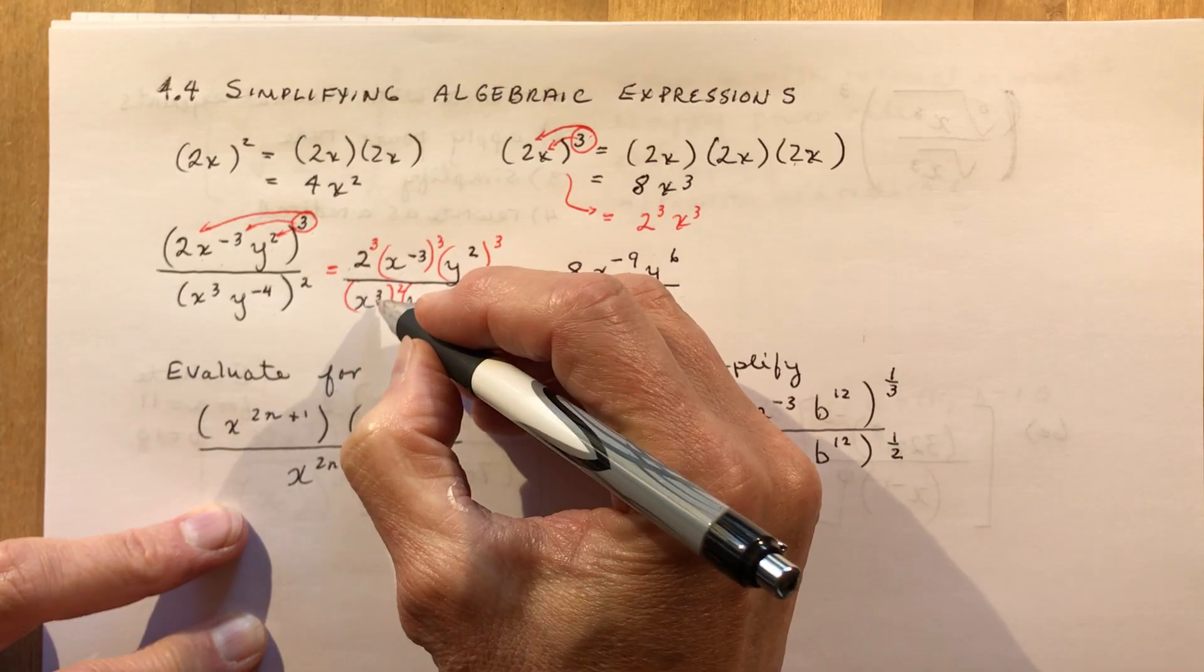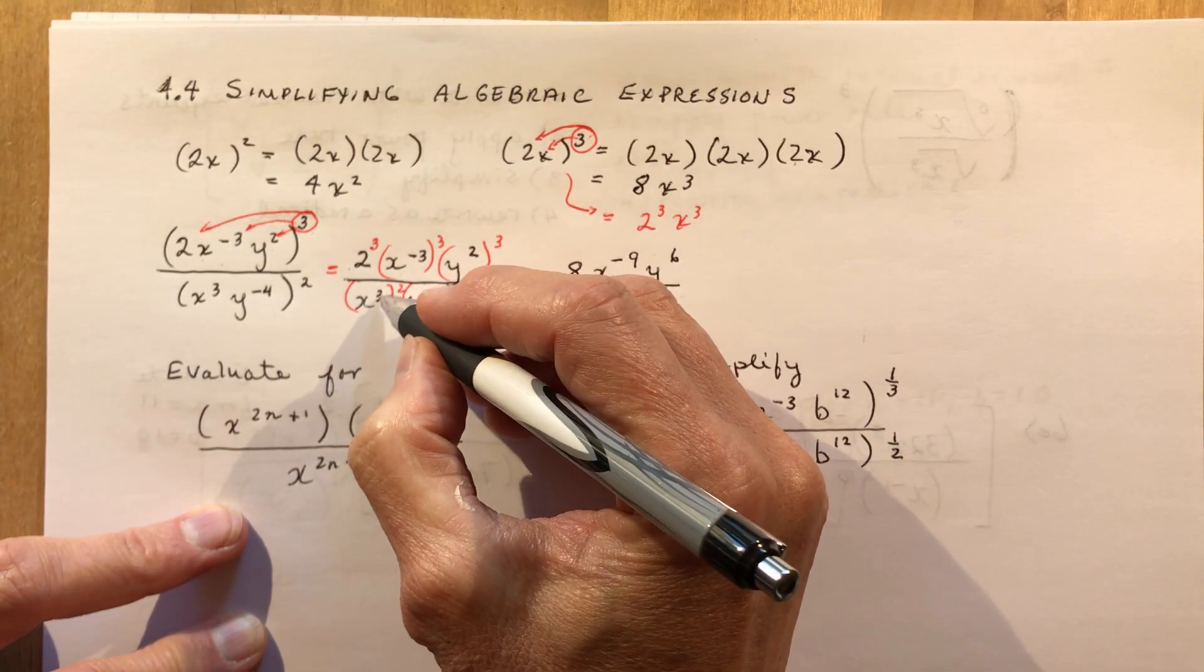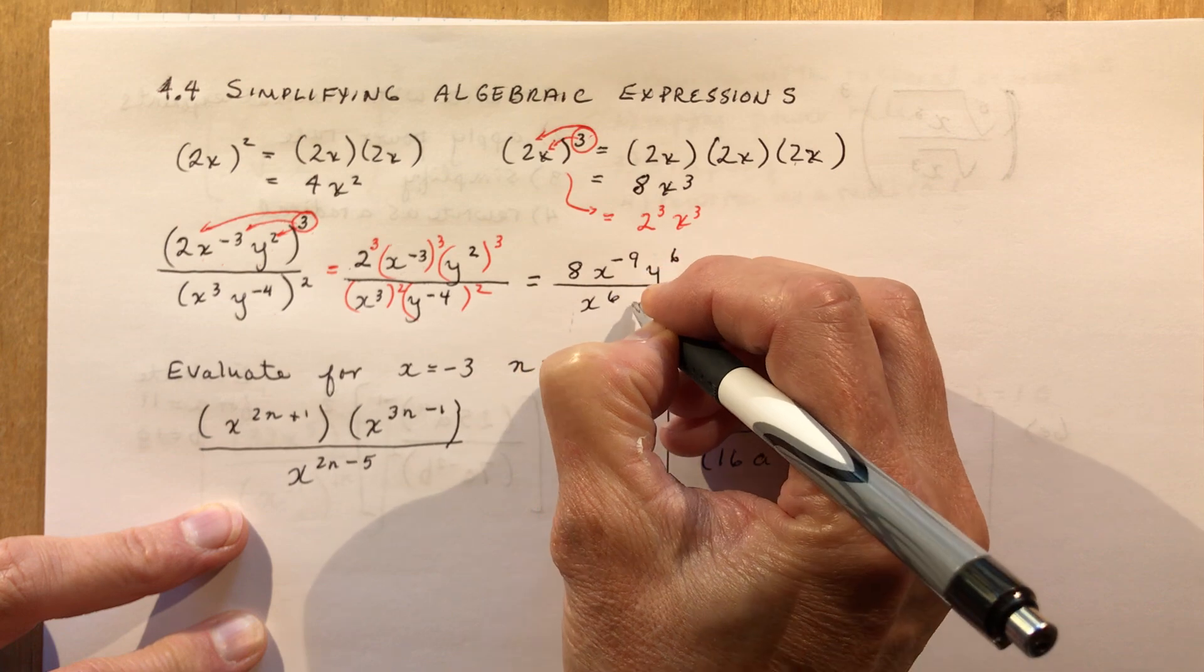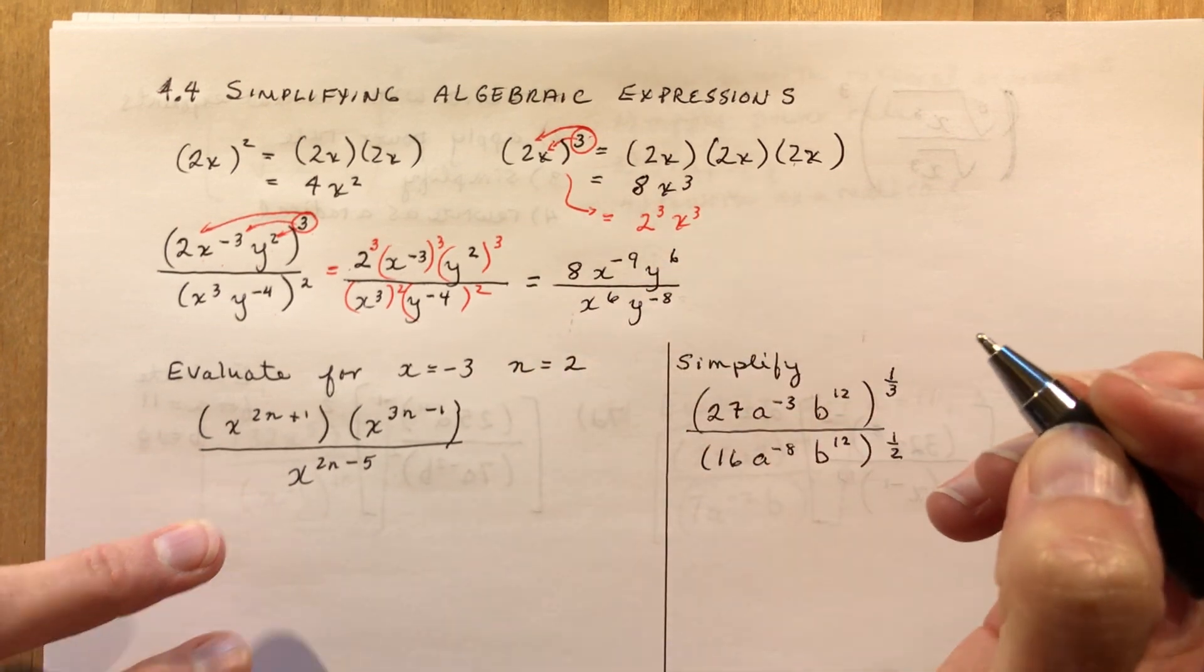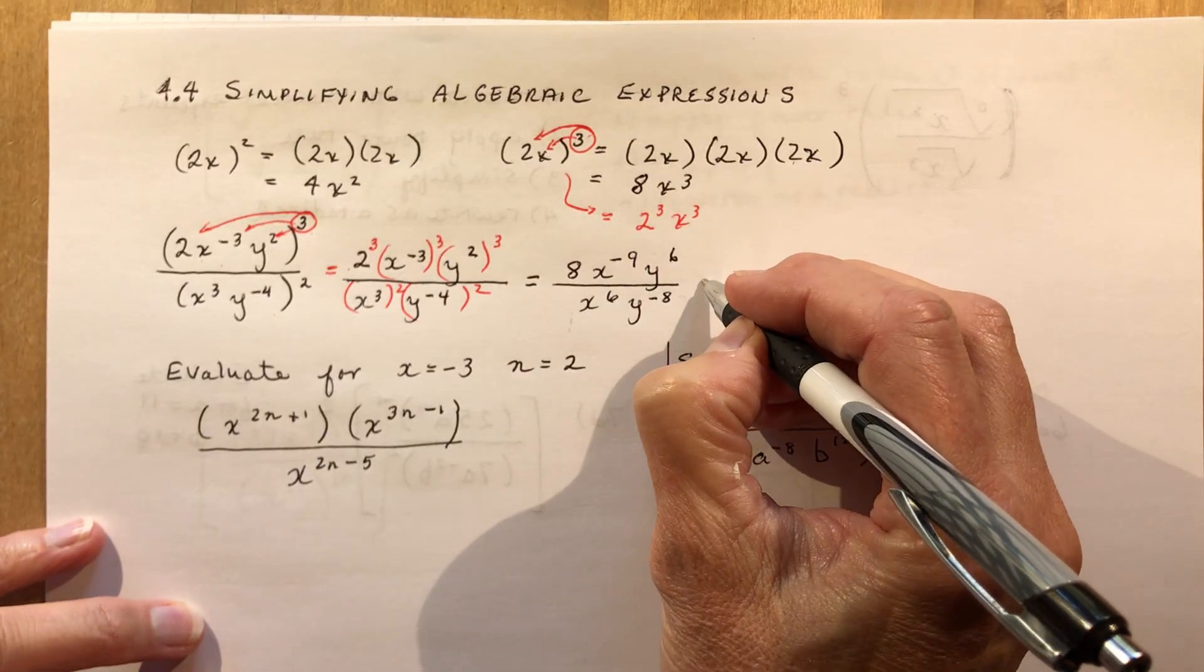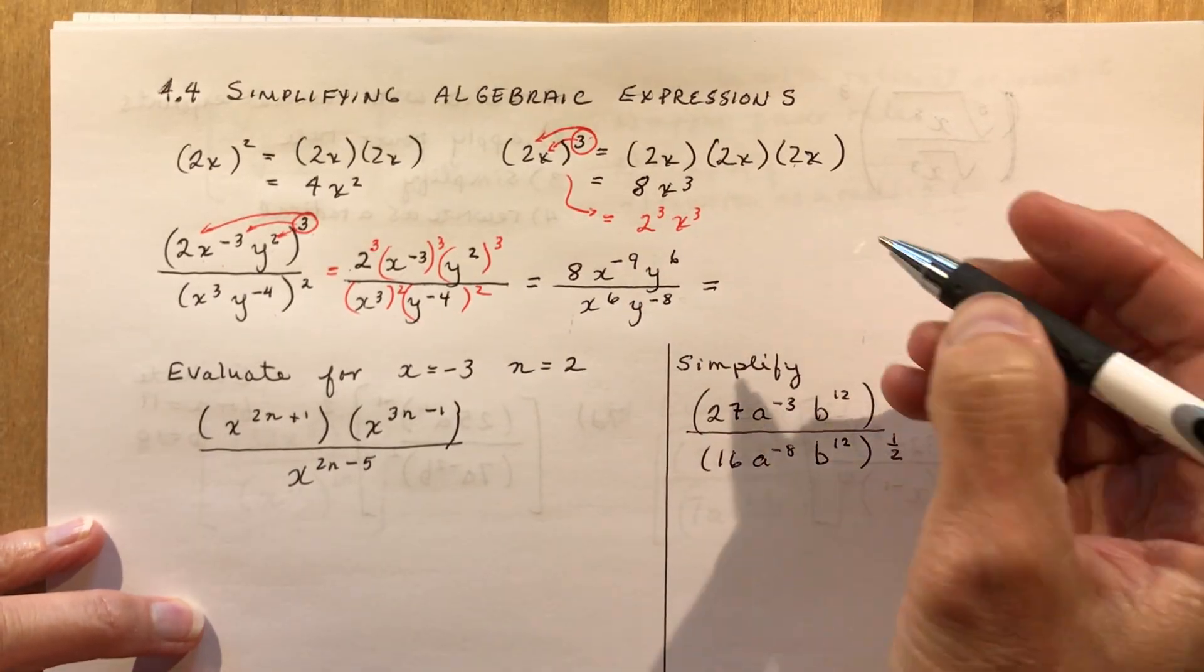And down in the denominator here, power to a power means multiply, remember? So I'm going to multiply those. It gives me x to the 6th, y to the negative 8. Now, I should have left more space because I never put two equal signs on a line, and now I'm going to have three of them.